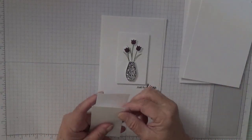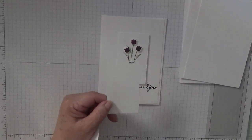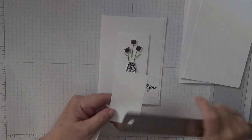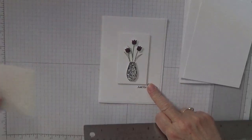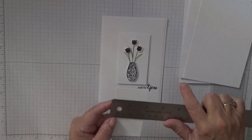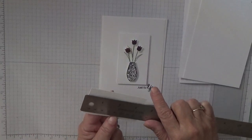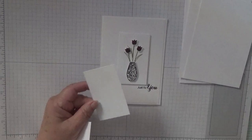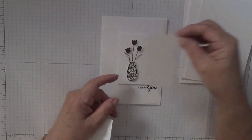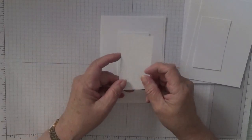I have cut out a rectangle stitch rectangle for the middle which measures one and seven eighths by three and three eighths. I've also got a scrap of white for the vase and the tulip tops.